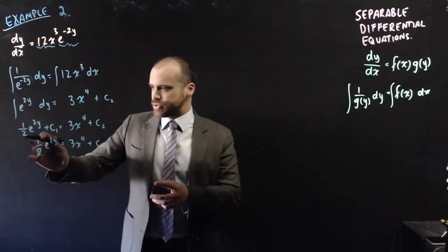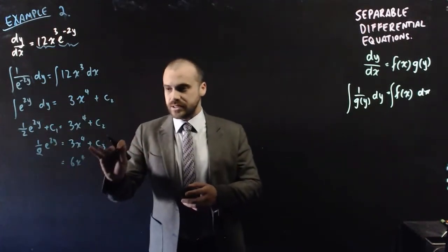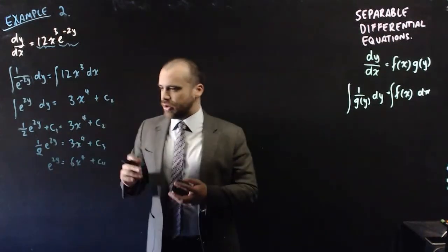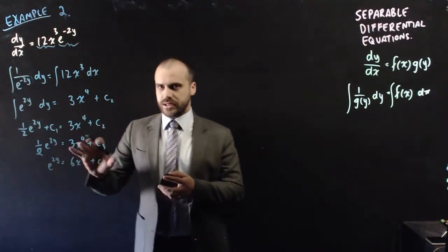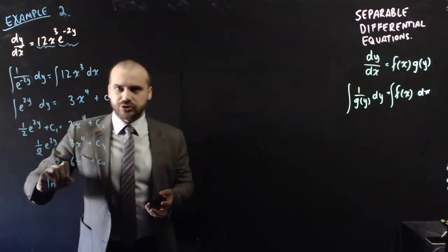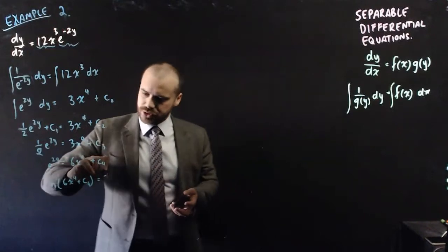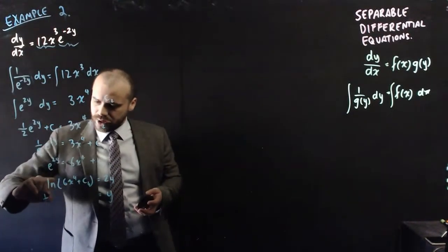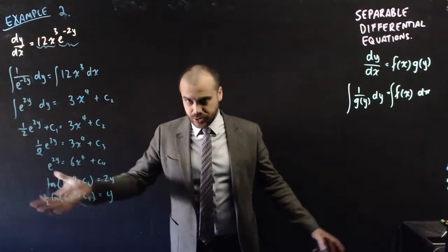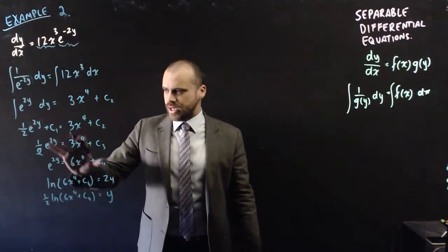The two constants combine into a single constant, giving one-half e to the 2y equals 3x to the 4 plus c. Multiplying both sides by 2 gives e to the 2y equals 6x to the 4 plus c. Taking the natural log of both sides: ln(6x to the 4 plus c) equals 2y, so y equals one-half ln(6x to the 4 plus c). The subscript notation on constants isn't necessary — a single c works fine.